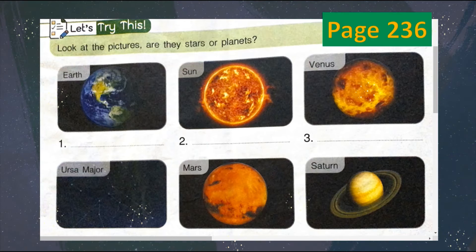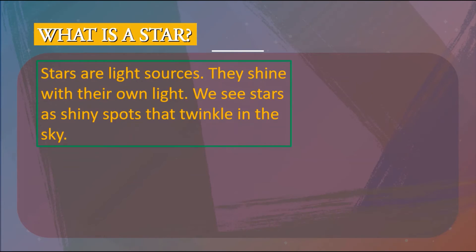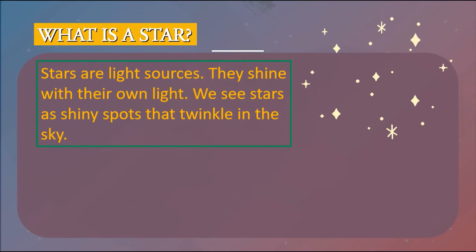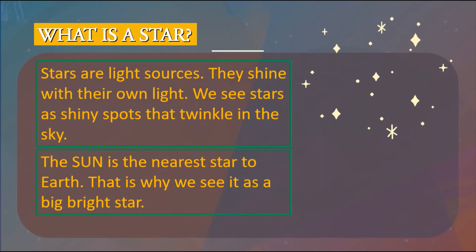I want you to pause this video and open your book to page 236, and come back when you are finished answering this part. I hope you are done. The question is: what is a star? Stars are light sources — they shine with their own light. We see the stars as shiny spots that twinkle at night. When you look at the sky in the evening and see bright lights that twinkle, they are all stars. What is an example of a star? The sun. It's the nearest star to the Earth.